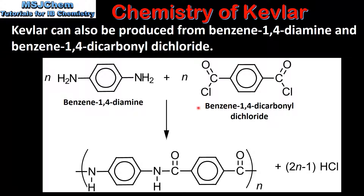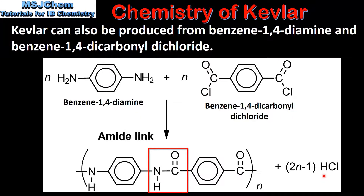On the right we have the full structural formula of benzene 1,4-dicarbonyl-dichloride. In the reaction, a hydrogen atom in the diamine reacts with a chlorine atom in benzene 1,4-dicarbonyl-dichloride. This forms a molecule of hydrogen chloride and a covalent bond between the carbon and nitrogen atoms, which is known as an amide link.